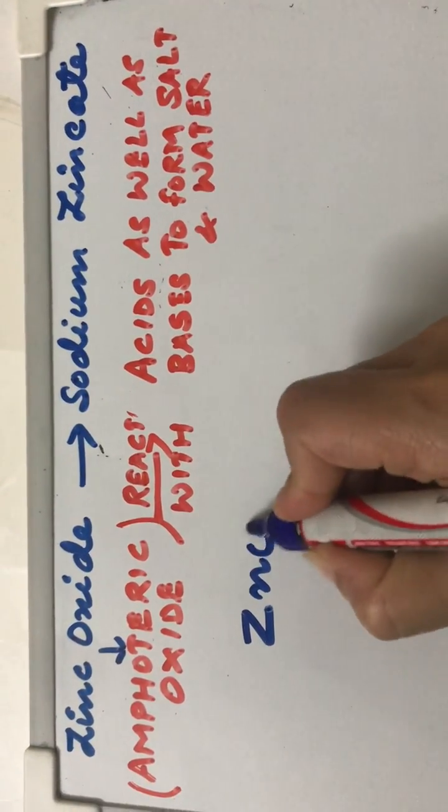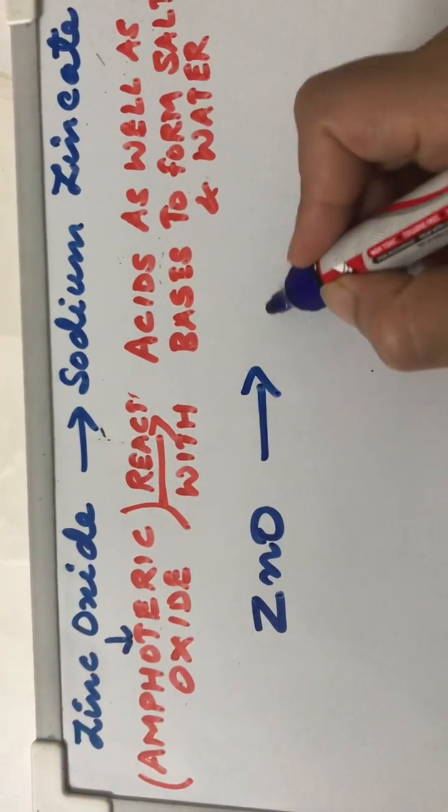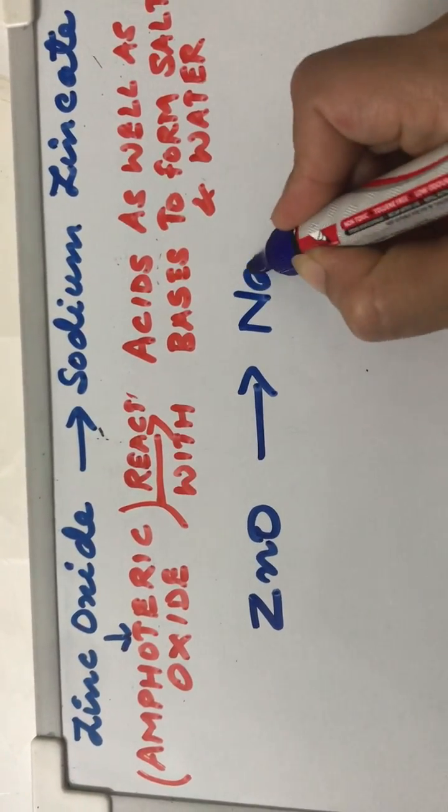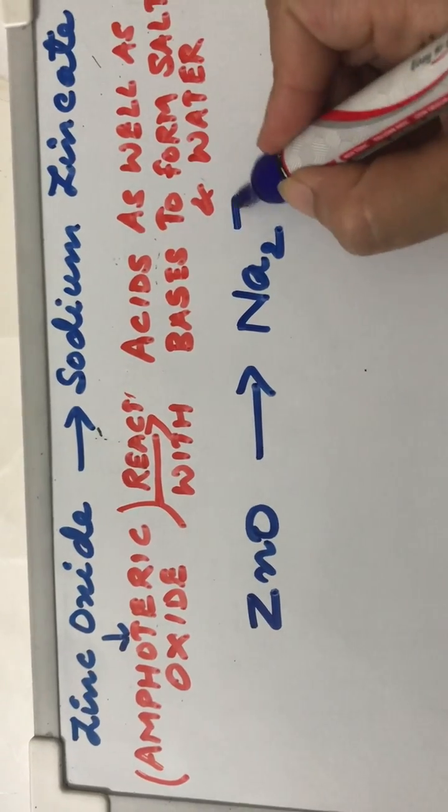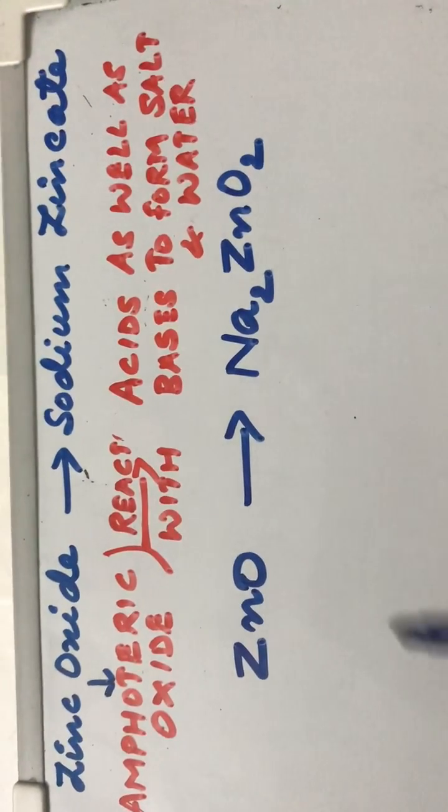That means we are going to write the formulas of zinc oxide which is ZnO and formula of sodium zincate is Na2ZnO2. We have to show this conversion.